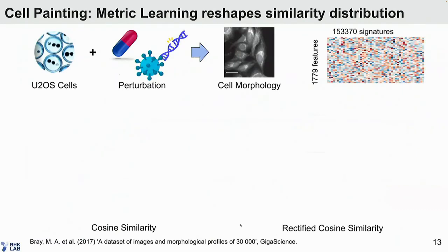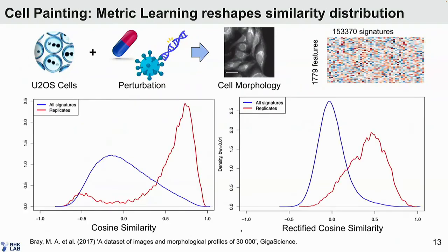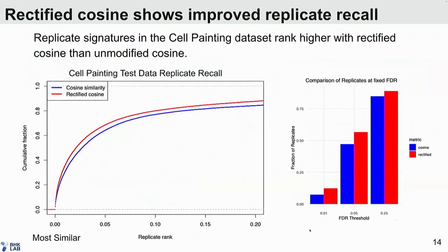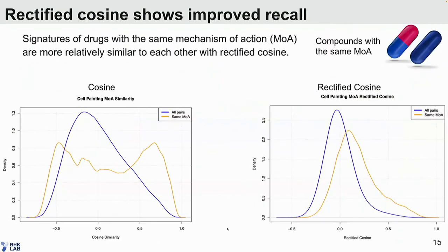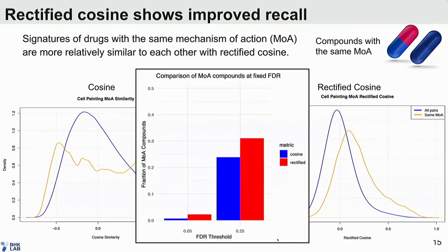We see the same results when applied to the cell painting perturbational data set, which uses cell morphology features. The distributions have shifted using the learned metric shown on the right, with improved discrimination near the high end — the original metric on the left is kind of saturated. Replicate pairs are better discriminated by the learned metric controlling for false discovery rates, with a more modest improvement than L1000 — something like 5% to 10% improvement in the fraction of replicate pairs recovered. Compounds with the same mechanism of action also show improved recall with the learned similarity function, though this is a harder problem in the cell painting space.